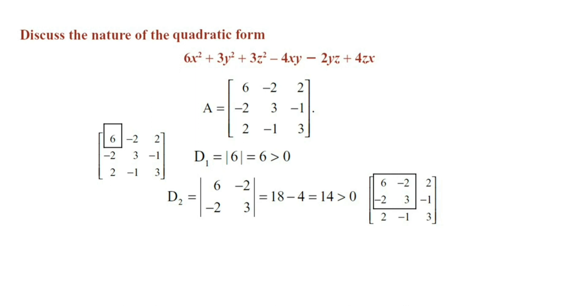The determinant of 6, -2; -2, 3. The result is 14, which is positive. D₃ is the determinant of matrix A. The result is 32, which is positive.